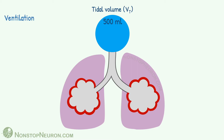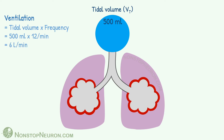Ventilation is the amount of air that moves in and out of the lung in one minute. If we multiply tidal volume with the frequency of respiration, we get the value of ventilation. A tidal volume of 500 ml at 12 breaths per minute gives a ventilation of 6 liters per minute.